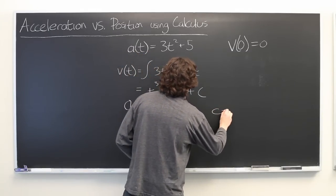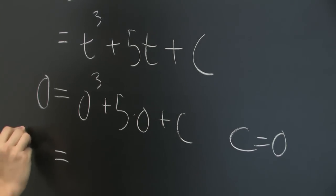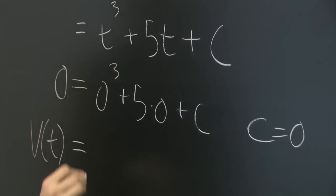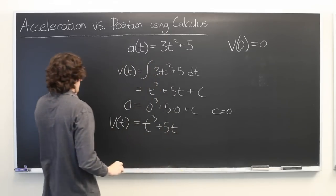Okay. So, we know that c is equal to 0. So, again, v of t is just t cubed, plus 5t. Okay.